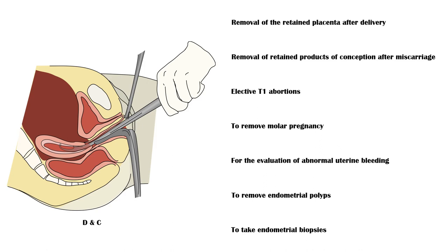In addition to dilation and curettage, some other very rare causes of Asherman syndrome include severe pelvic infections, schistosomiasis, and genital tuberculosis.